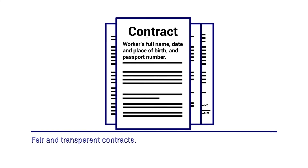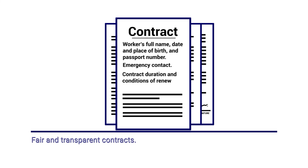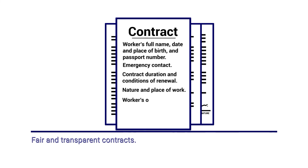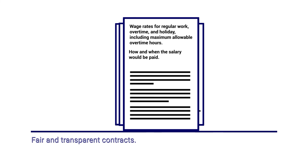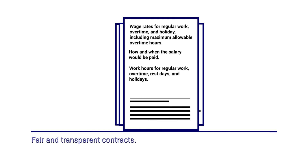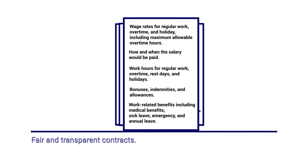A fair and transparent contract should contain the worker's full name, date and place of birth and passport number or equivalent identification, worker emergency contact information, contract duration and conditions of renewal, nature and place of work and occupational designation, wage rates for regular work, overtime and holiday including maximum allowable overtime hours, how and when the salary would be paid, work hours for regular work, overtime, rest days and holidays, bonuses, indemnities and allowances if any, and other non-cash compensation and work-related benefits including medical benefits, sick leave, emergency and annual leave.